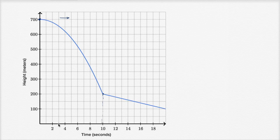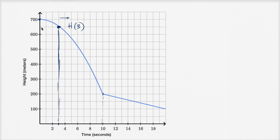At three seconds, let's see what h of three is — what is her height at three seconds? I'm just looking at a graph, so I'm going to have to ballpark it. At three seconds, her height looks pretty close. We just have to approximate it. The height after three seconds looks like it's about halfway between 600 and 700, so it looks like it's about 650 meters.